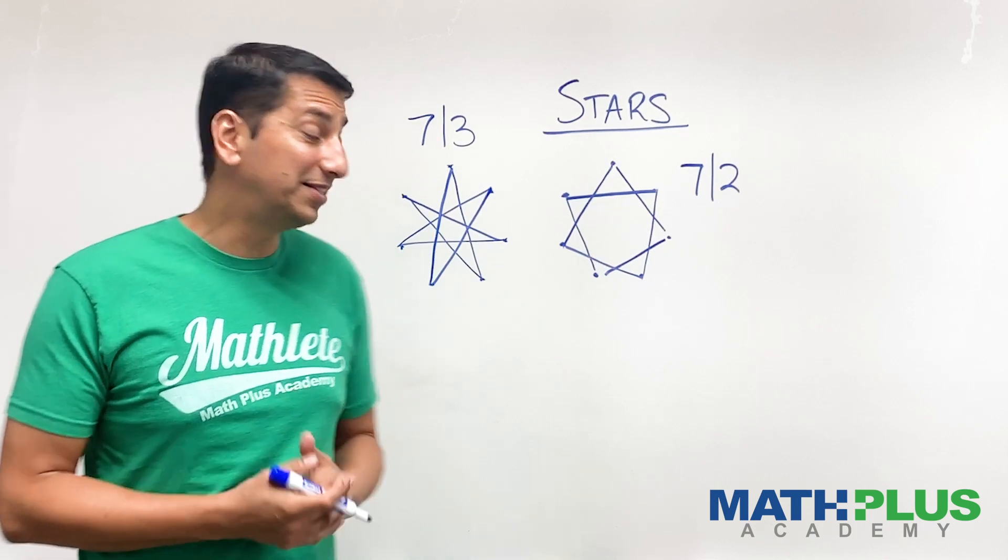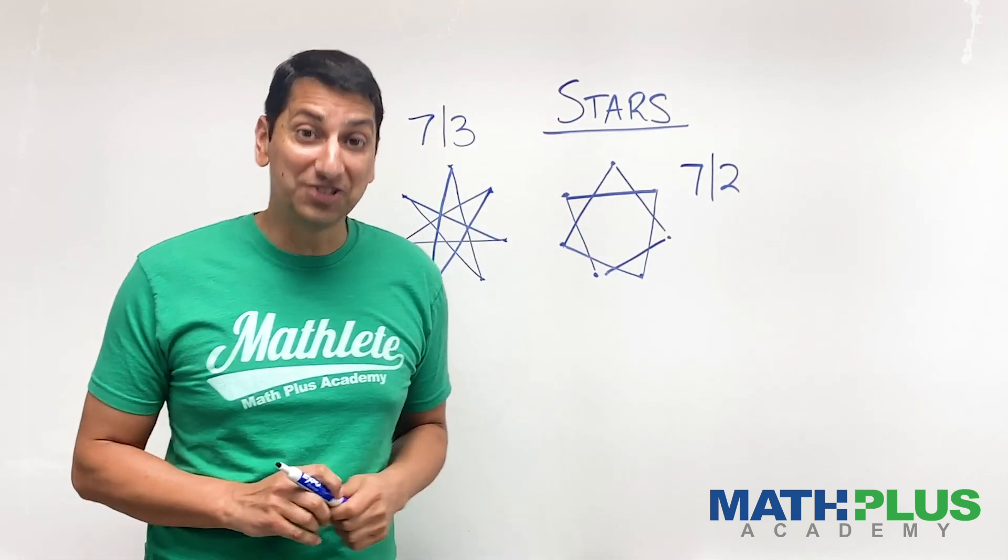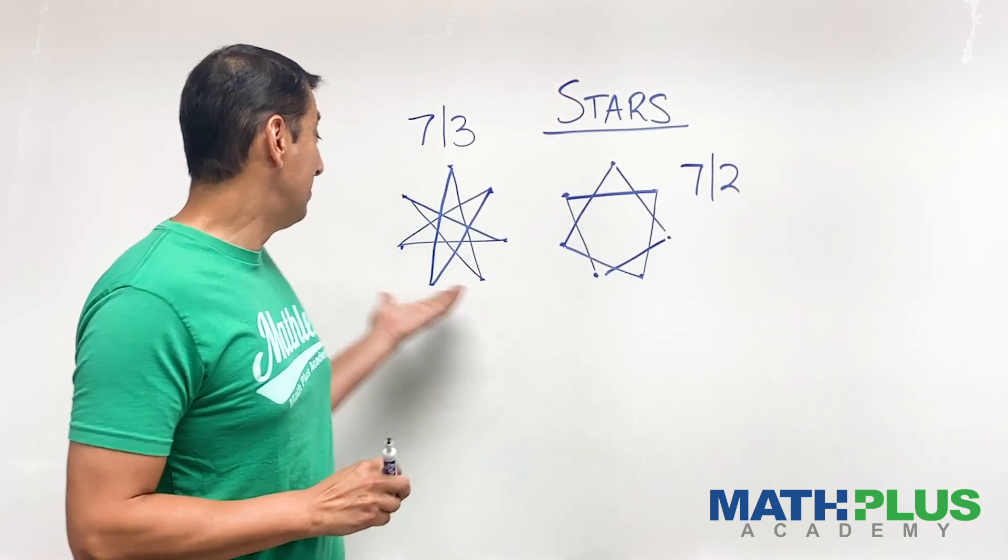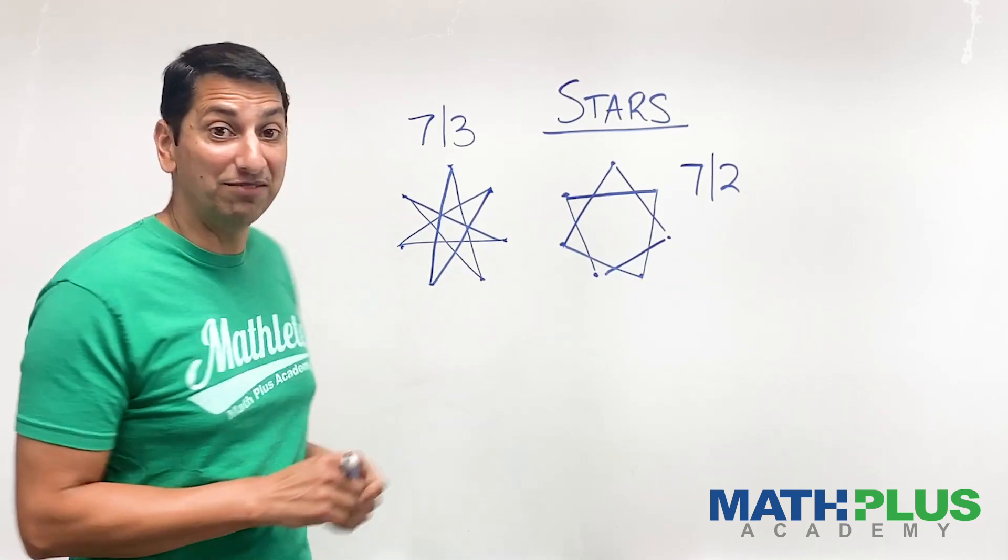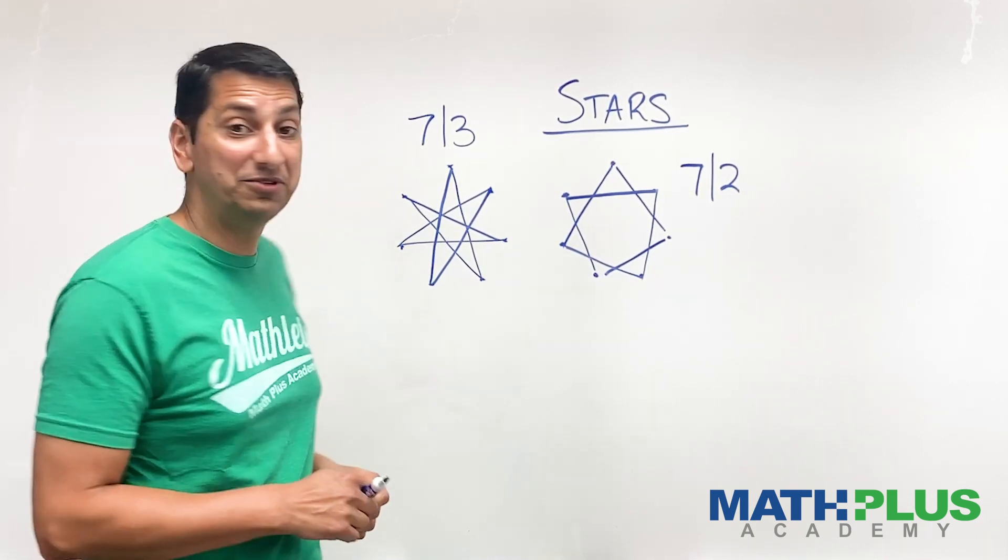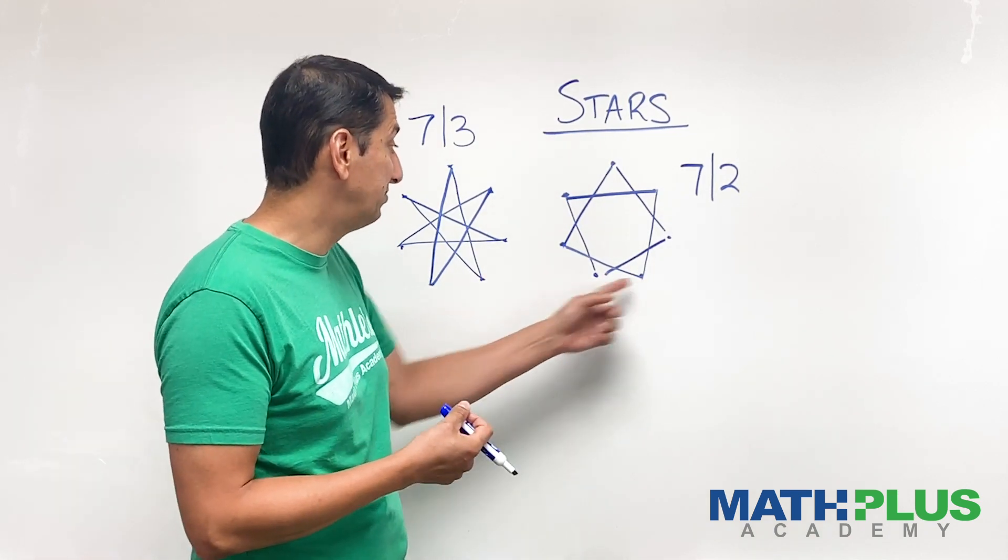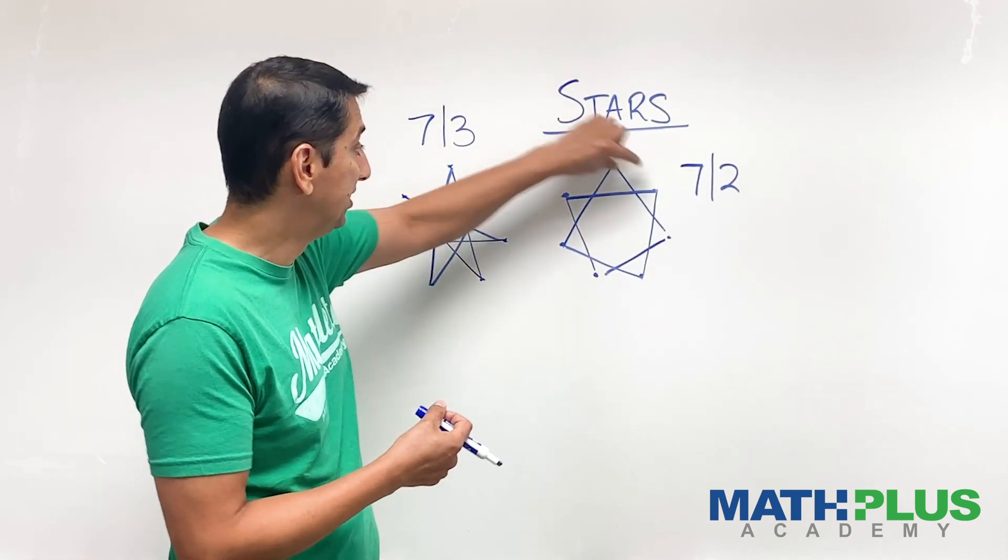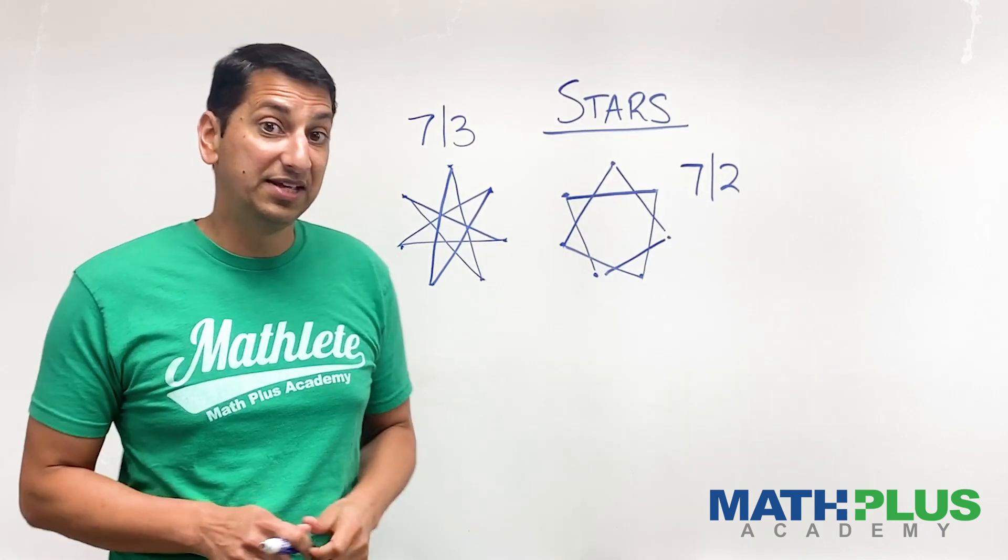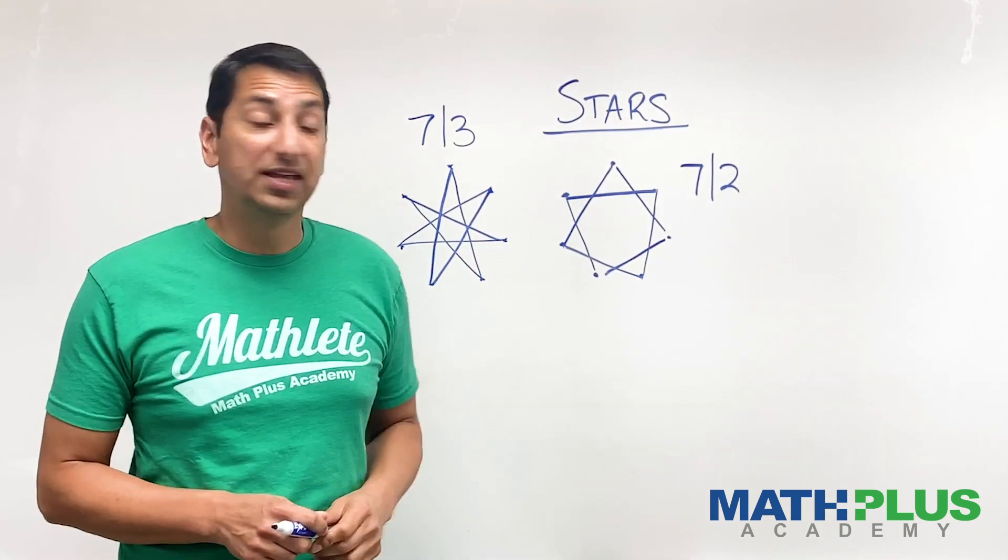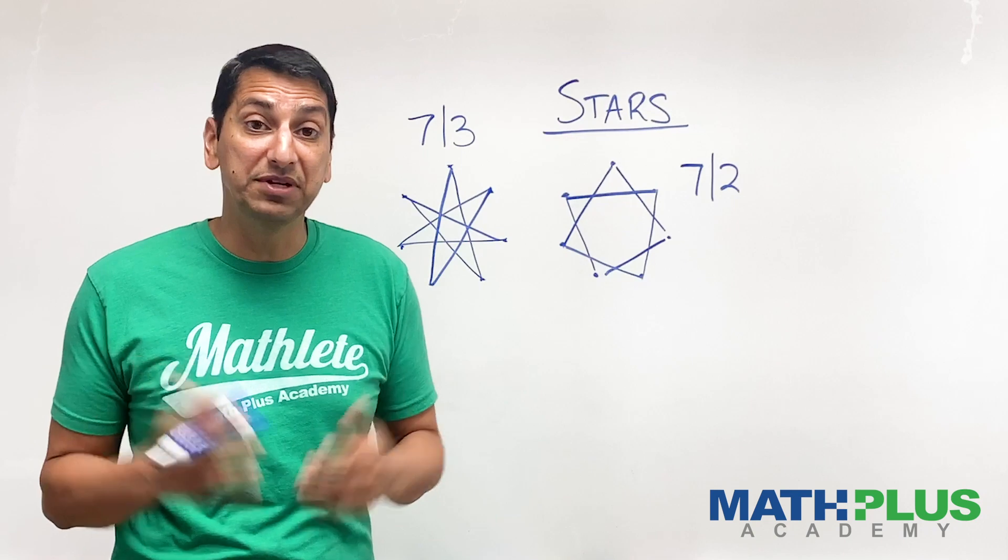Now you're probably seeing why we call this stars. Because this looks a lot like a star. Maybe a seven pointed star, which is kind of neat. And in a way, I guess you could call this a seven pointed star. I mean, there are seven little triangles here on the outside. So in this case, in a seven two and a seven three, everyone touches the ball.